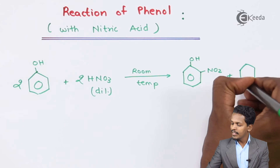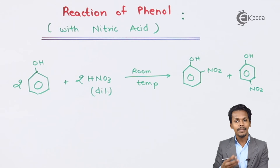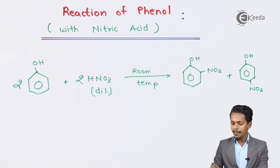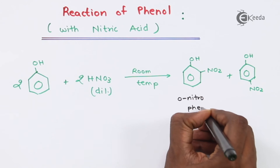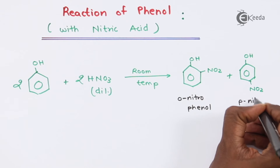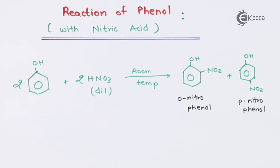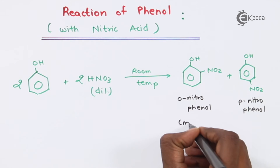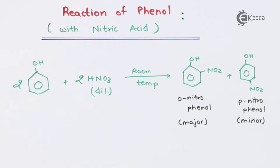We get another product as well — a para product where NO2 is attached at the para position with respect to the OH. So the first product is ortho-nitrophenol and the second is para-nitrophenol. It has been found that the ortho product is the major product, while para-nitrophenol is the minor product, obtained in lesser quantity.